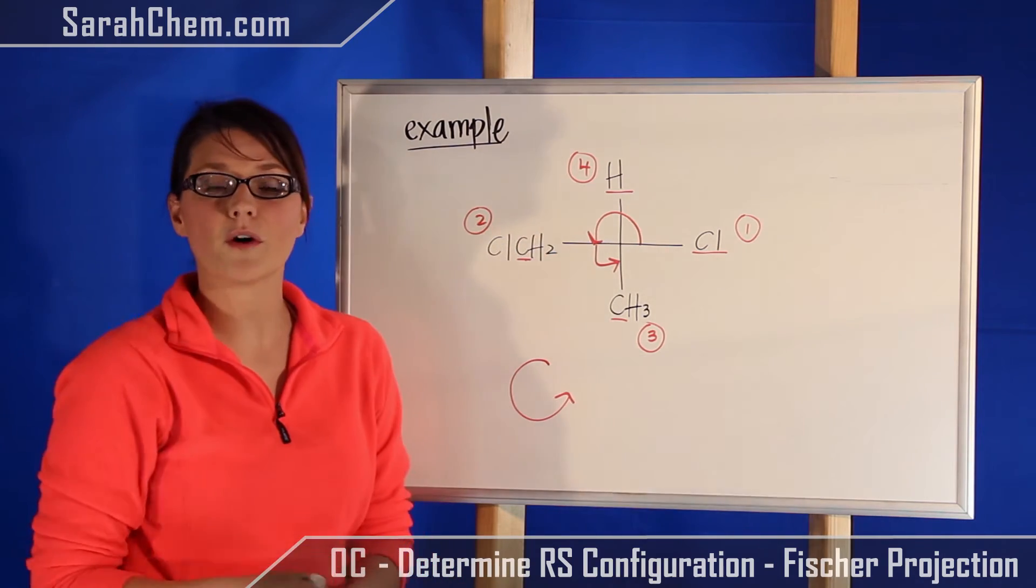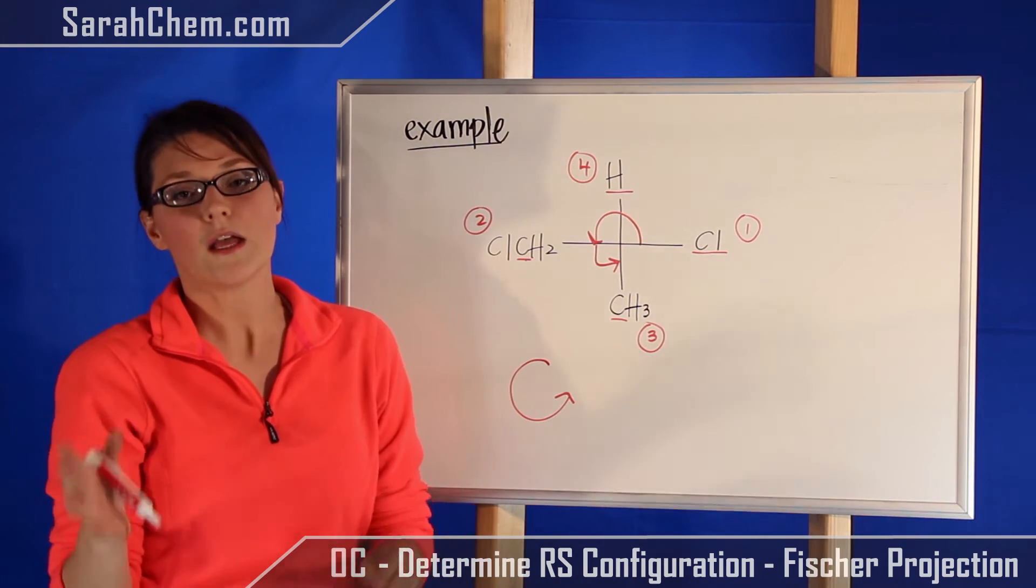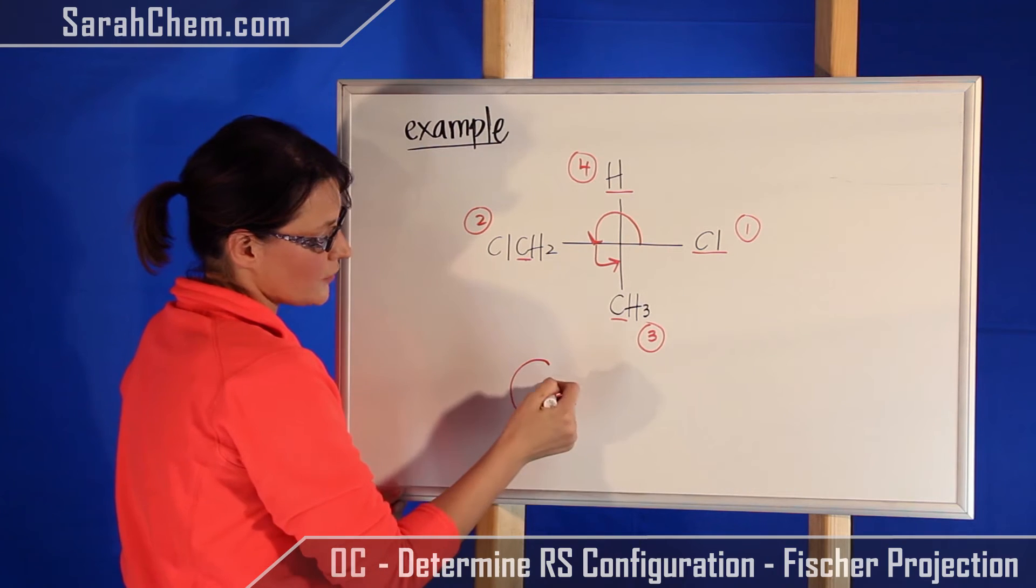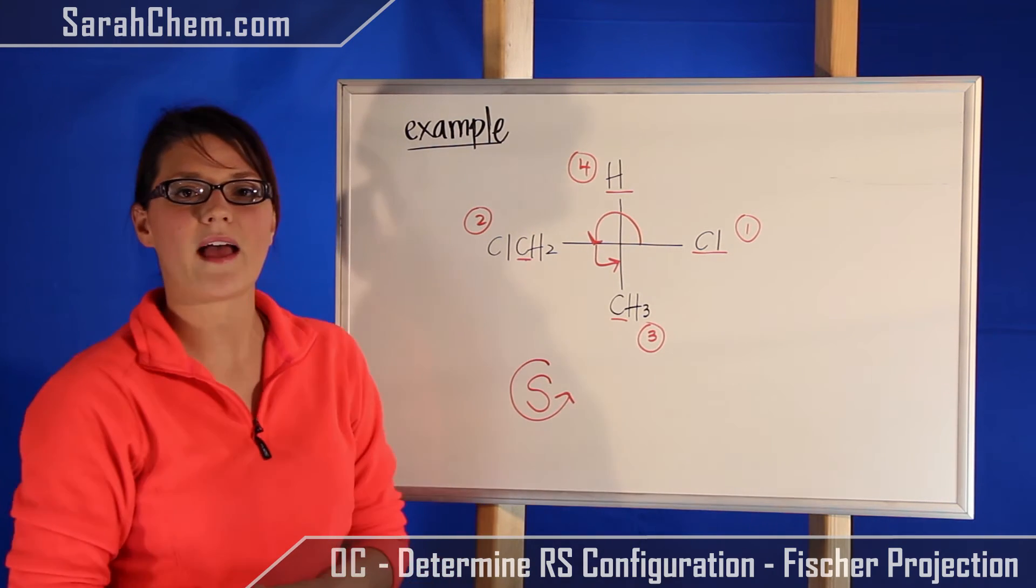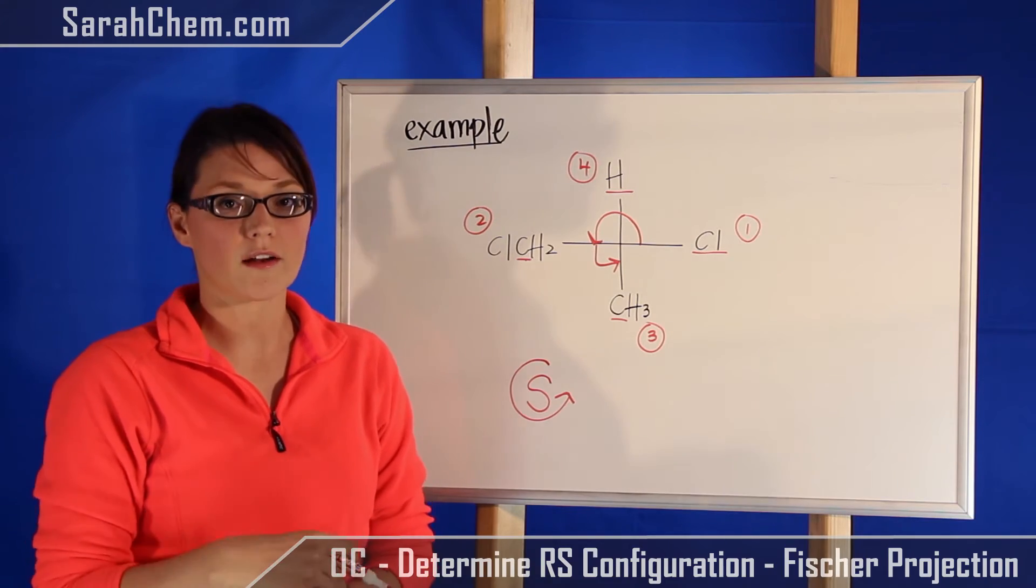So in this case, because four is sitting on the vertical position, remember vertical means very good, what you see is what you get. So in this case, I'm moving in a counterclockwise direction. So I know that this here would have the S configuration. Let's take a look at an example where it's not in the vertical position.